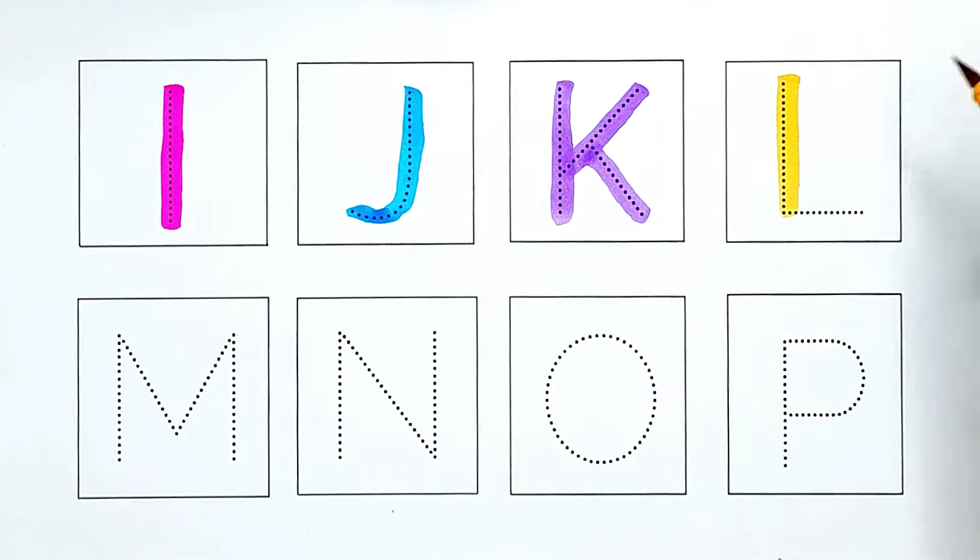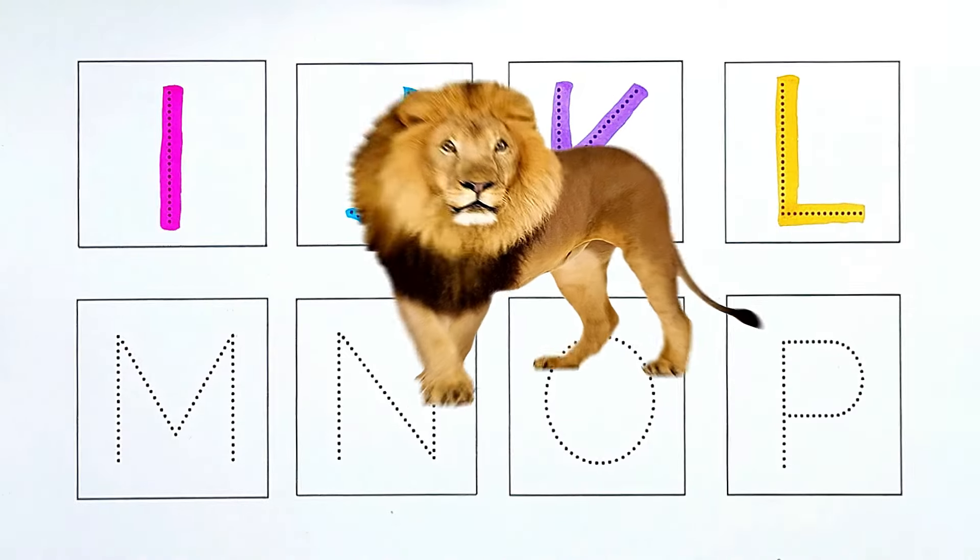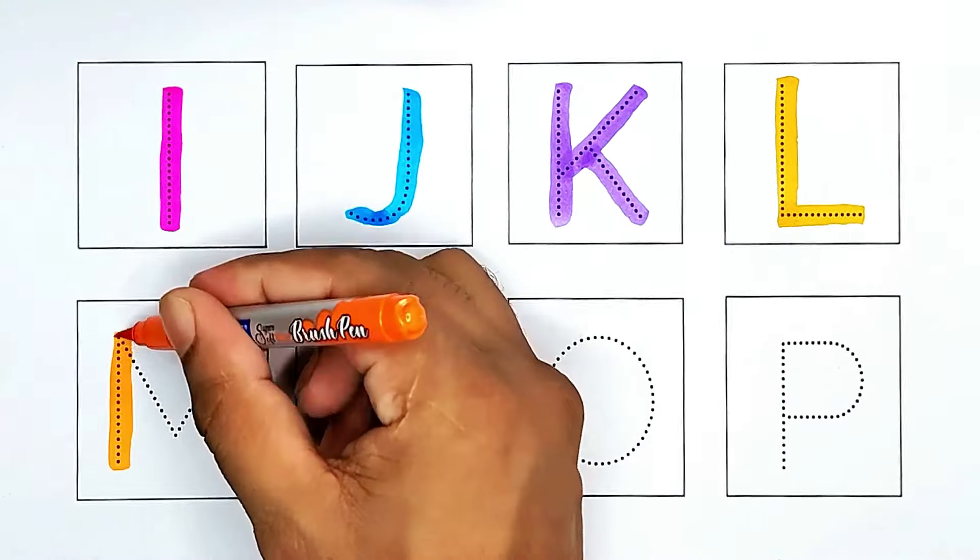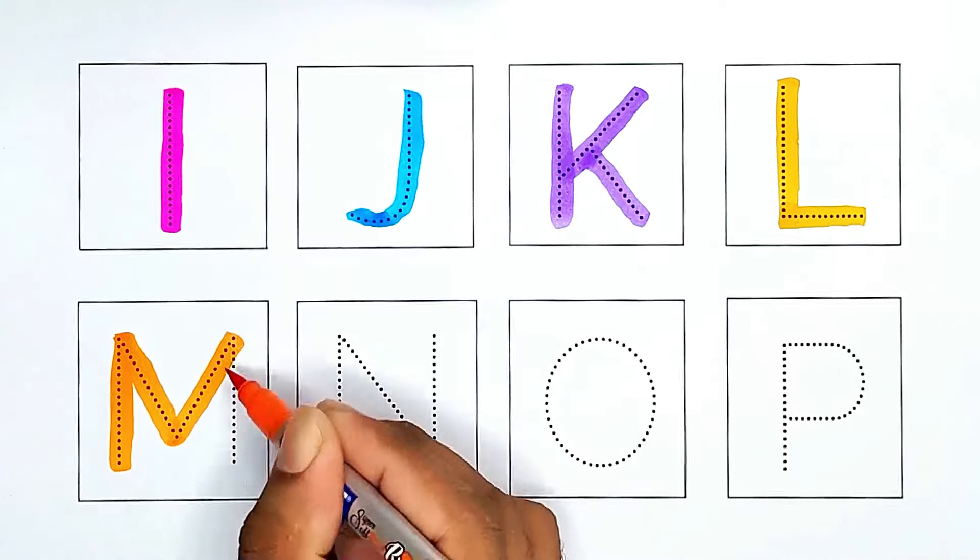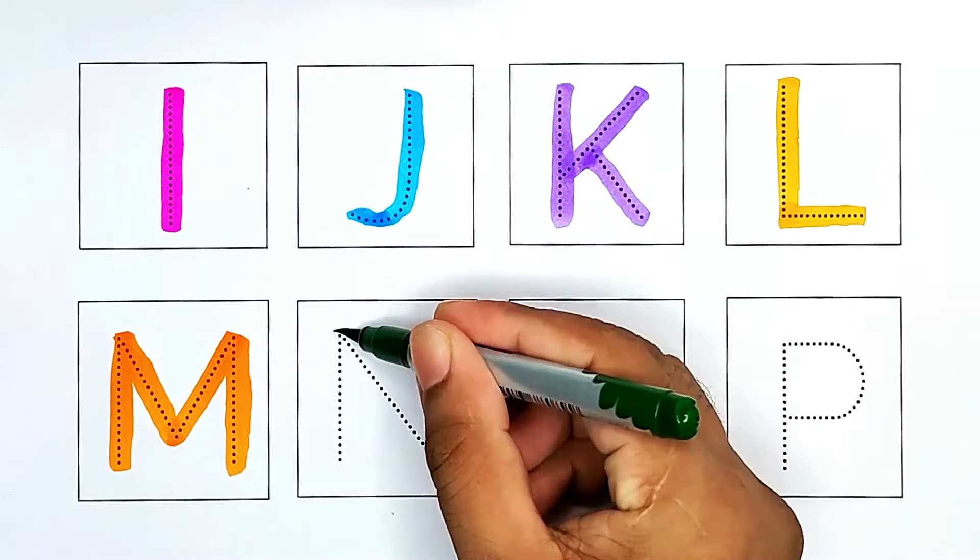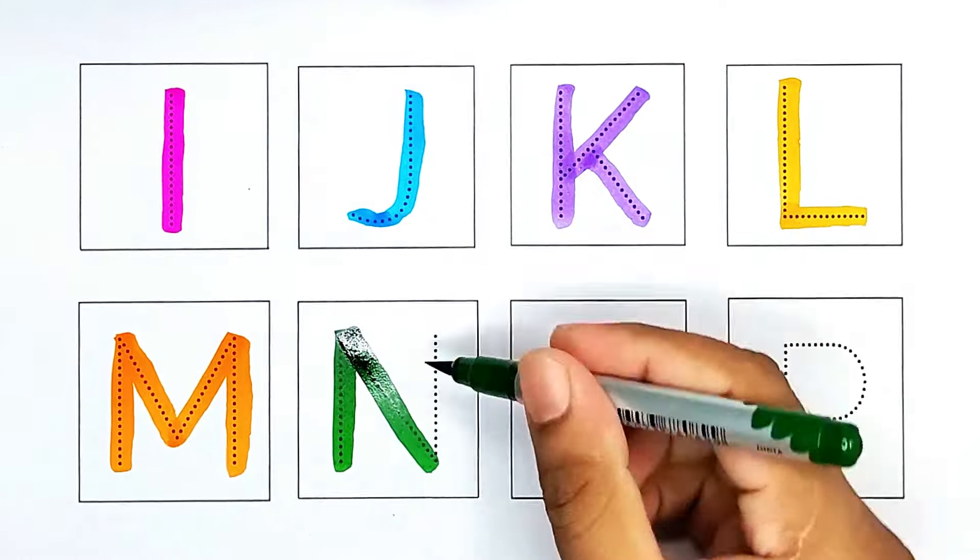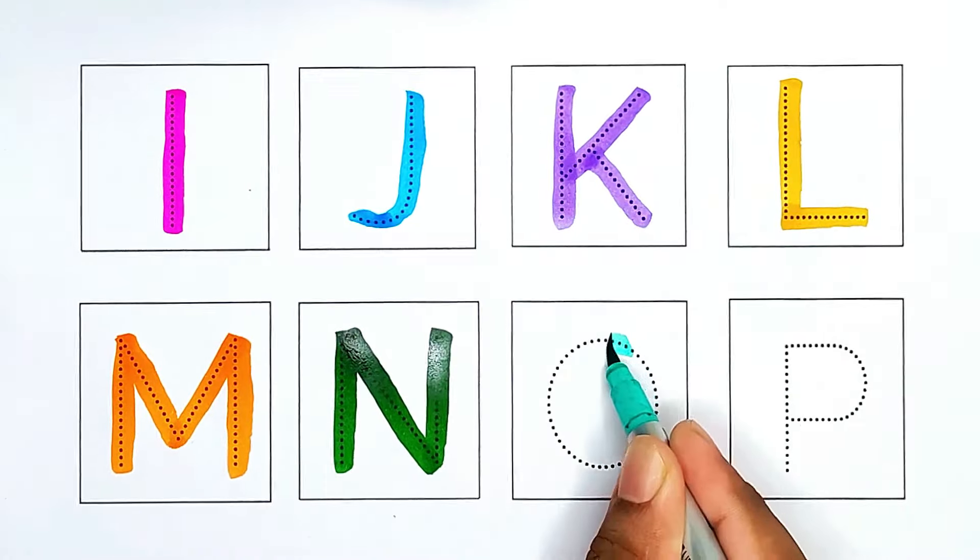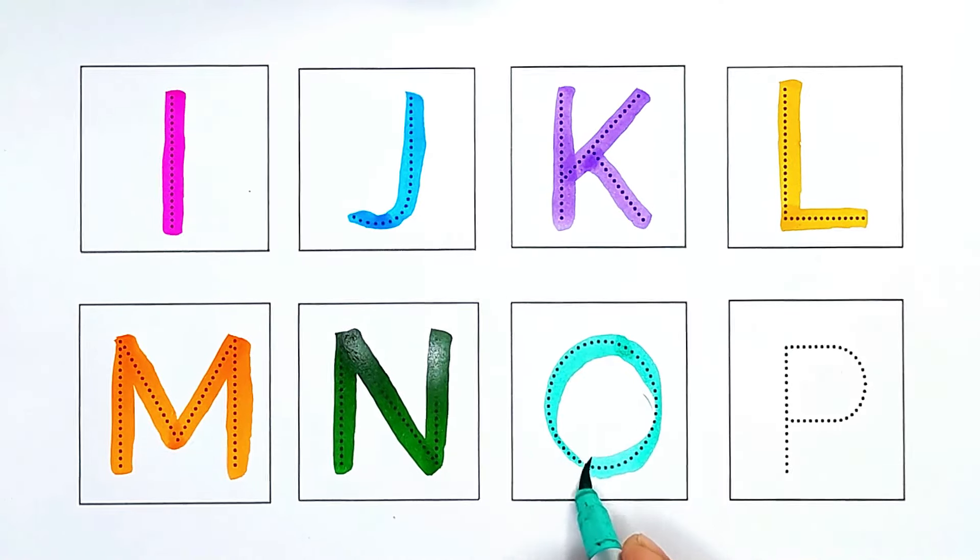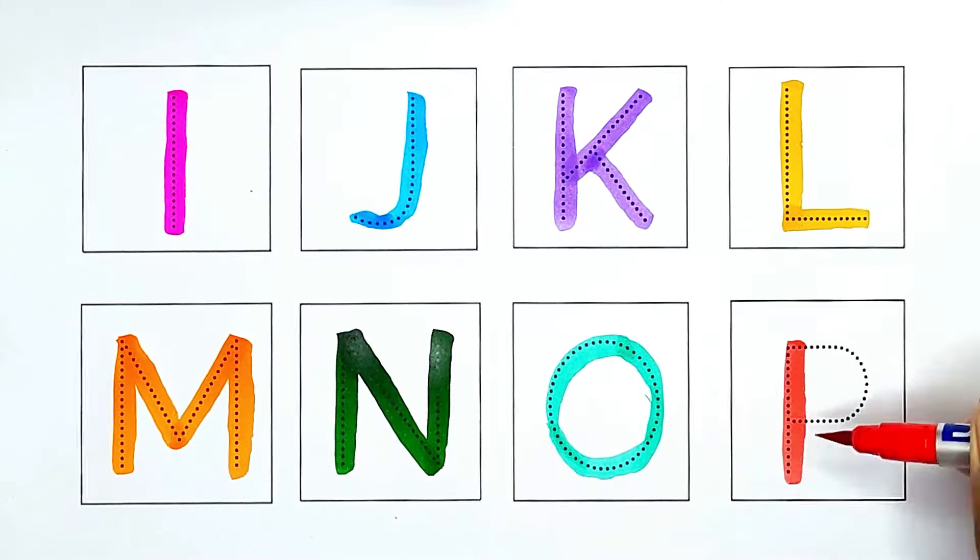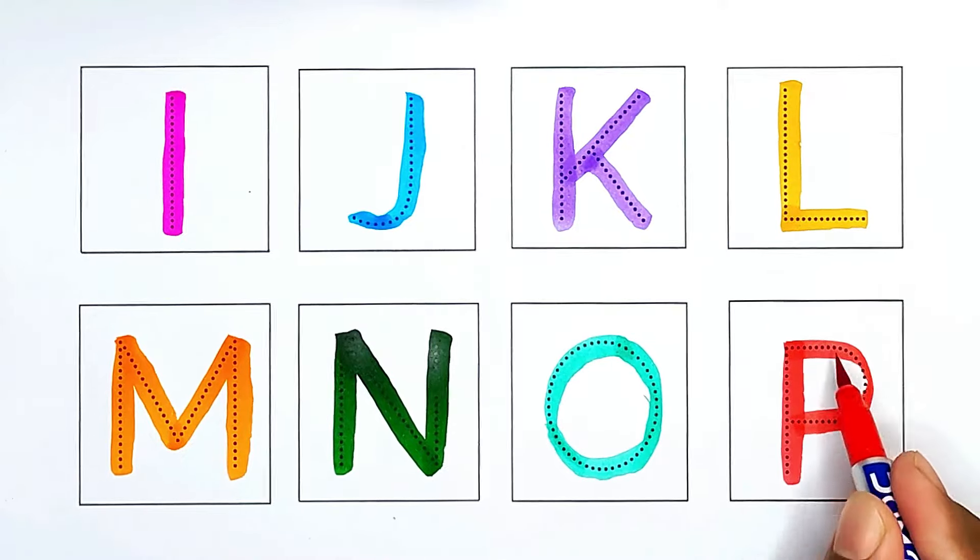L, L for lion. M, M for monkey. N, N for nest. O, O for orange. P, P for pen.